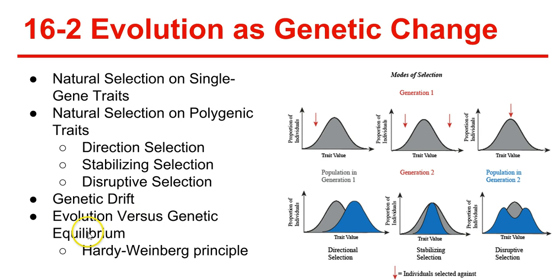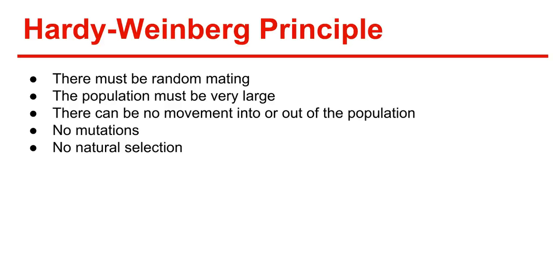Next, we have evolution versus genetic equilibrium, covered under the Hardy-Weinberg principle. The Hardy-Weinberg principle states that all allele frequencies will remain constant unless one or more factors are affecting the population. Genetic equilibrium is the situation when allele frequencies remain constant. The Hardy-Weinberg principle must meet five conditions. First, there must be random mating, which guarantees all organisms have an equal opportunity to produce offspring. Second, the population must be very large, because a larger population is less affected by genetic drift.